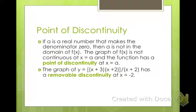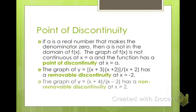If it's a removable discontinuity, that means you can factor it out. x equals negative 2 is a removable point because you can factor out (x+2) from both the numerator and the denominator — that's a removable discontinuity. For a non-removable discontinuity, if we have (x+4) divided by (x-2), those factors are not the same, so you can't cancel the 2 — it has to stay there. That's a non-removable point of discontinuity.